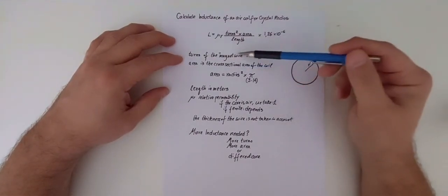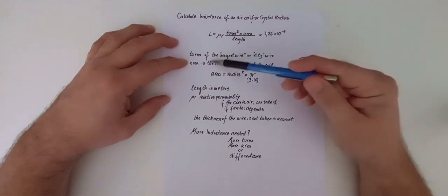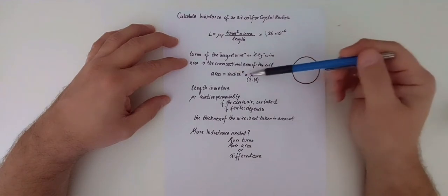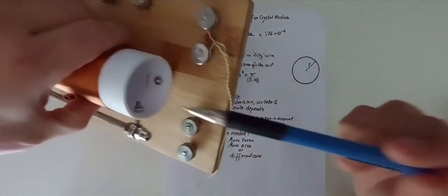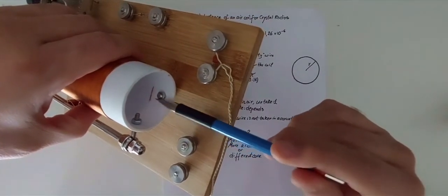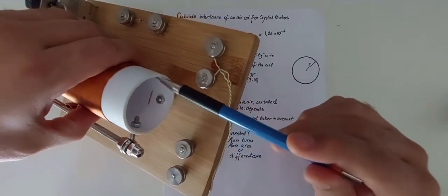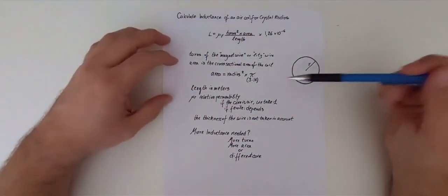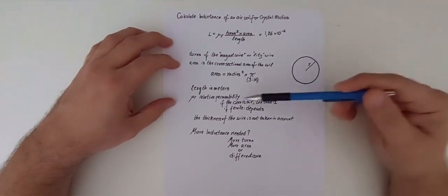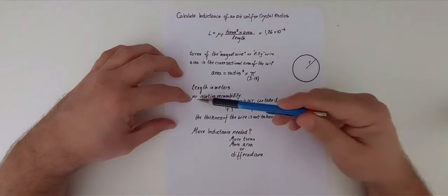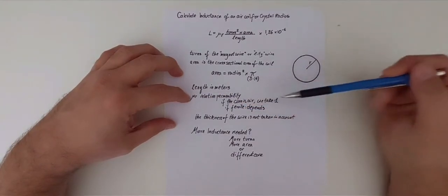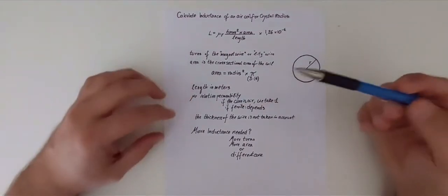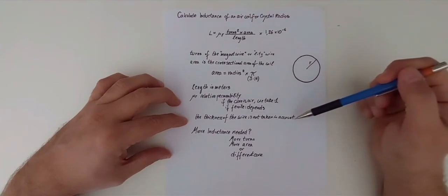By area, this is intended this area. That's the area over the length, and the length is the length of the windings times a constant. So turns squared are the turns of the magnet wire or Litz wire. The area can be calculated from the radius. So area is radius squared times pi. This is the area, and from the center to the edge is the radius. And we get that figure that we may have to report in meters. The equation wants the value in meters. The relative permeability: if the core is air, we take 1. If it's ferrite, depends, we have to look that up. And the thickness of the wire in this case is not taken into account.